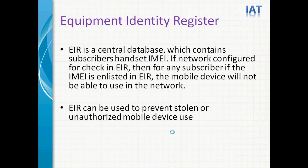Equipment Identity Register — EIR is a central database that contains subscribers' handset IMEI. If the network is configured to check EIR, then for any subscriber, if the IMEI is unlisted in EIR, the mobile device will not be able to use the network. EIR can be used to prevent stolen or unauthorized mobile device use.